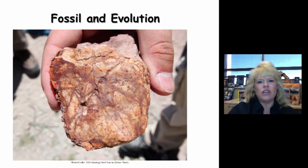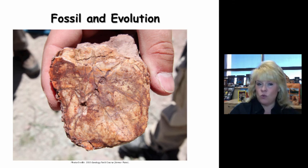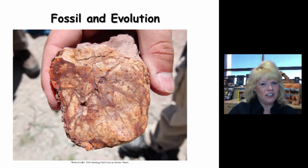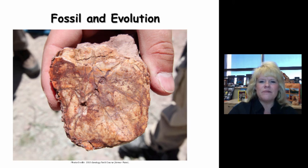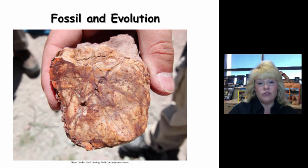You're looking at a fossil here from this year's field course. Think about what you might guess that is — ponder it for a second. I'll tell you it's a bone, and it's Triassic in age. You're probably thinking you've never seen a bone that really looks like that. Think about crocodiles and alligators, and then think about the bony structures they have on their back.